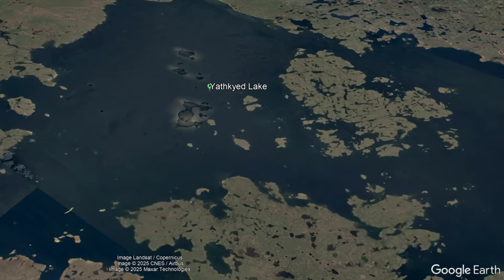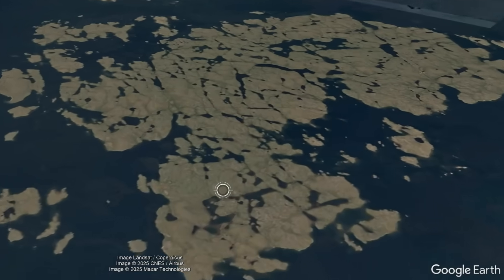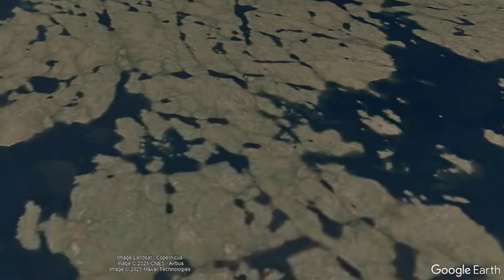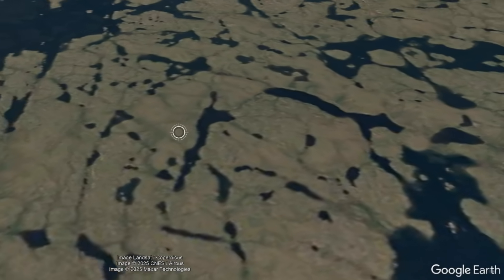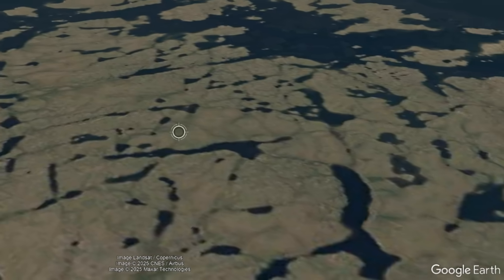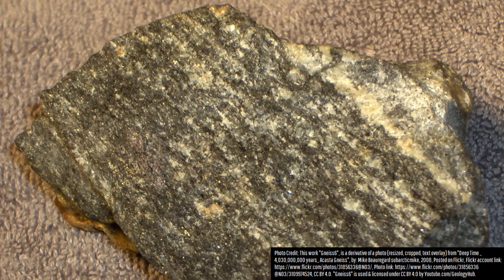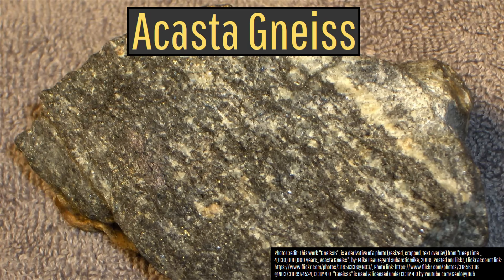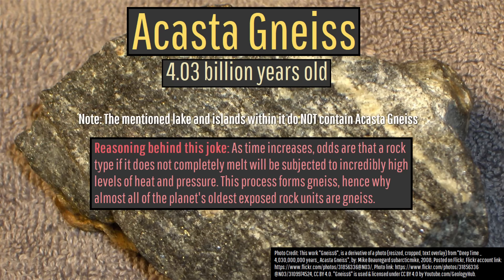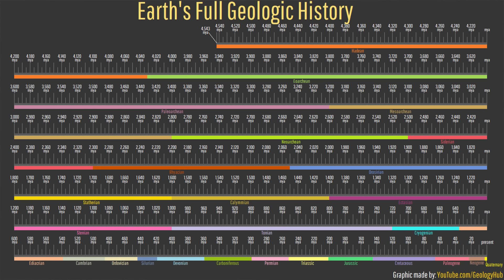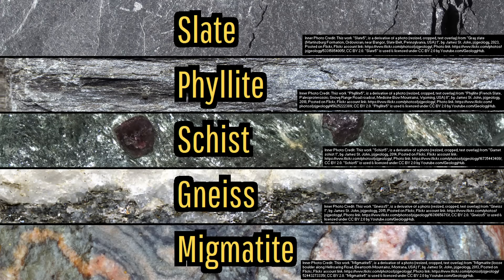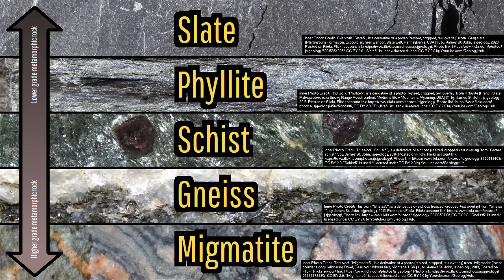But what about its geology? The entirety of the islands within the lake and 99% of the rocks immediately on the rim of Yathkyed Lake are a type of rock that I jokingly call the end result of every single rock type in a craton if it doesn't get completely melted down — gneiss. And this gneiss is dated 2.6 billion years ago during the Neoarchean period. Gneiss is the highest grade of metamorphic rock you can reach without partially or completely melting a rock.